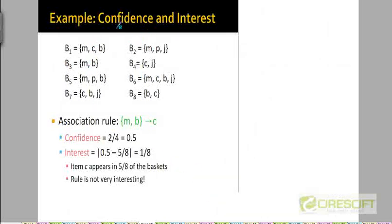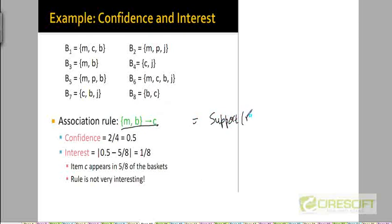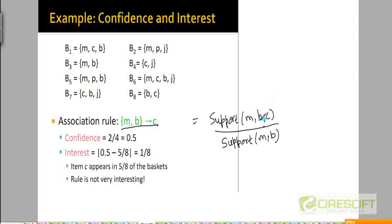Here is another example of confidence and interest. Going back to those eight baskets we saw previously, let's focus on the association rule M, B goes to C — those who purchase milk and beer also tend to purchase Coke. The confidence of this rule would be the support of M, B, C divided by the support of M, B. Among all transactions which had milk and beer, how many also had Coke? Looking at the transactions, two of them have M, B and C — so the numerator is two.